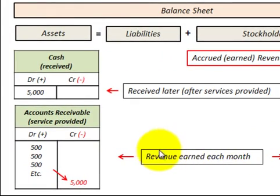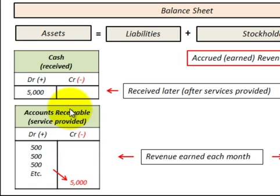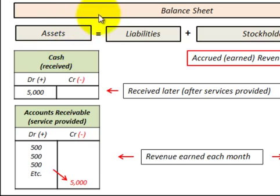Then later, after we get paid for those goods or services — in this case the $5,000 payment — we credit accounts receivable, reducing it by $5,000, and the corresponding debit is to cash, where we debit cash for $5,000 for the payment received. That increases the cash account, and remember that cash is an asset on the balance sheet.